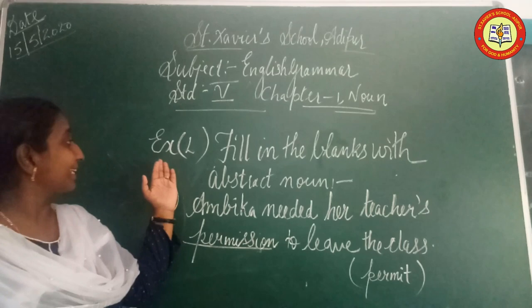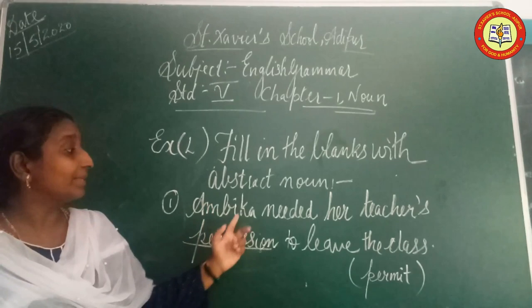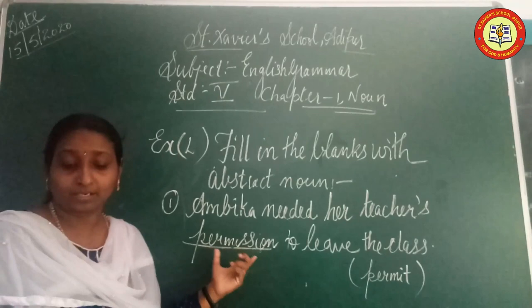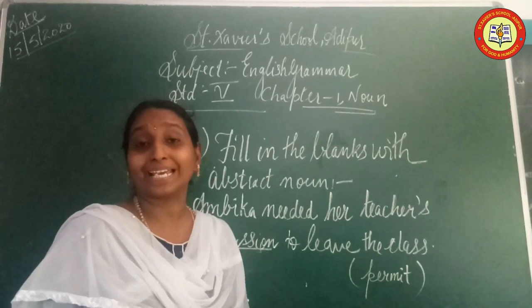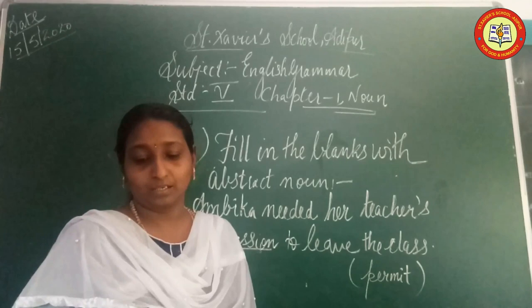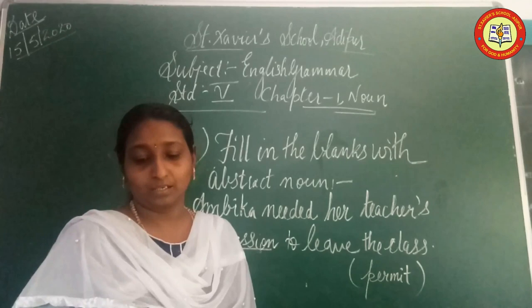Exercise L: Fill in the blanks with the abstract noun form. First: 'Ambika needed her teacher's permission to leave the class.' The word is Permit, abstract noun is Permission. Second: 'The doctors waited for the arrival of the child's mother.' Third: 'Hatred leads to violence.' Fourth: 'India achieved its freedom after much struggle.' Fifth: 'The length of this room is exactly the same as its breadth.' Sixth: 'There was lots of excitement in the classroom when the teacher announced the picnic.'